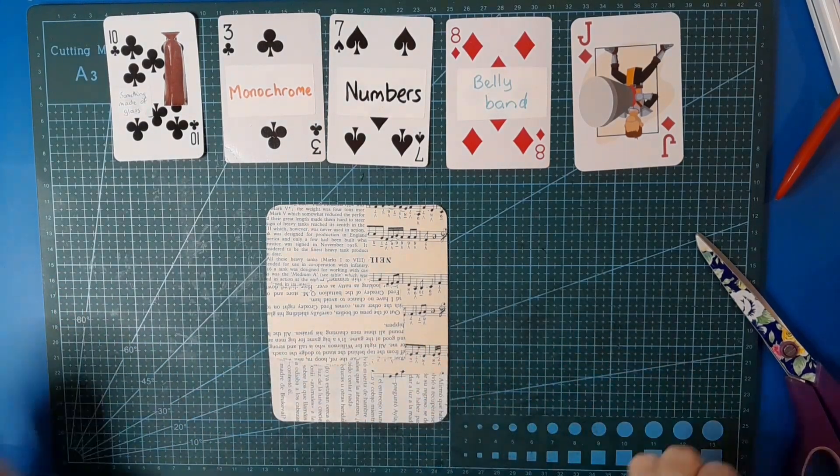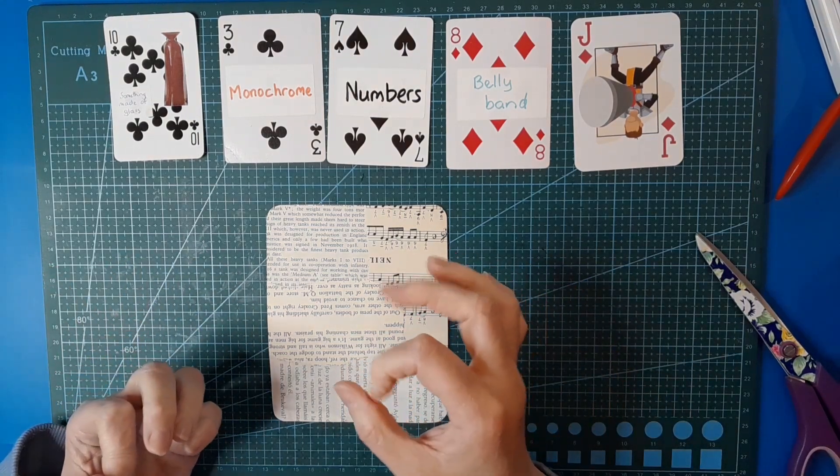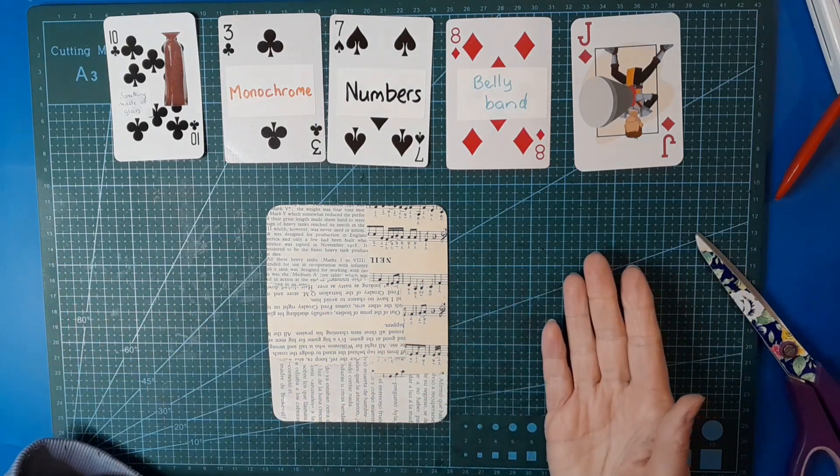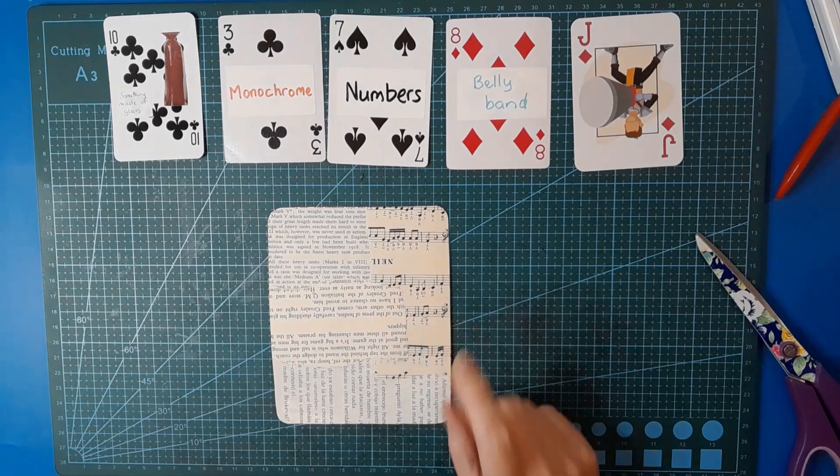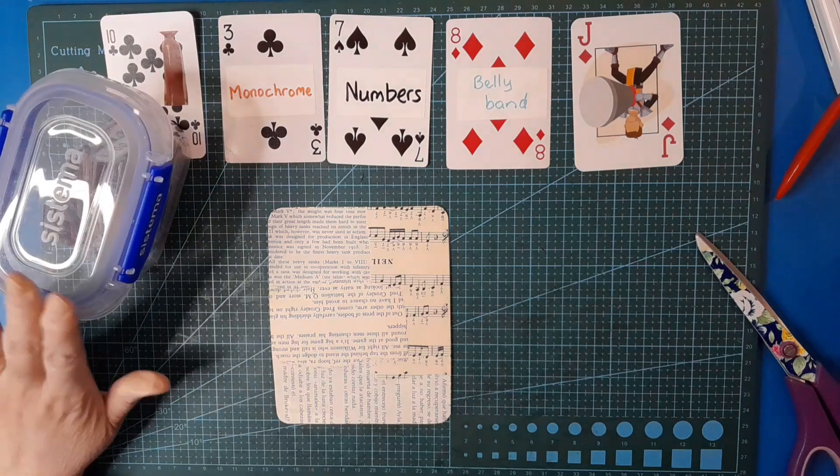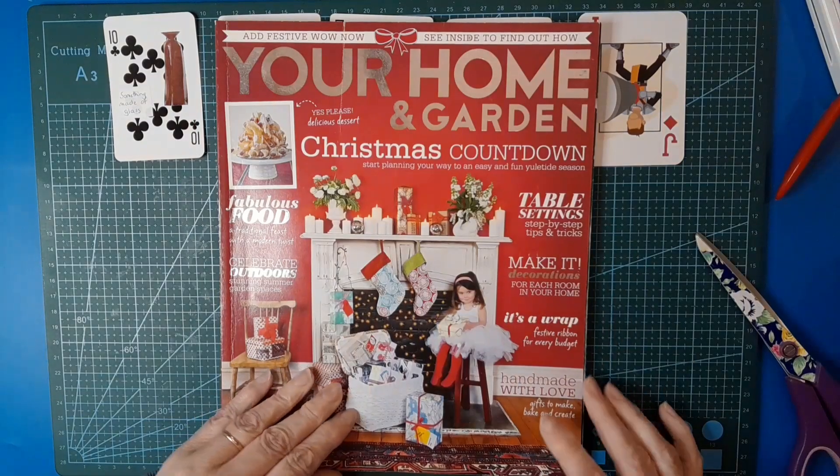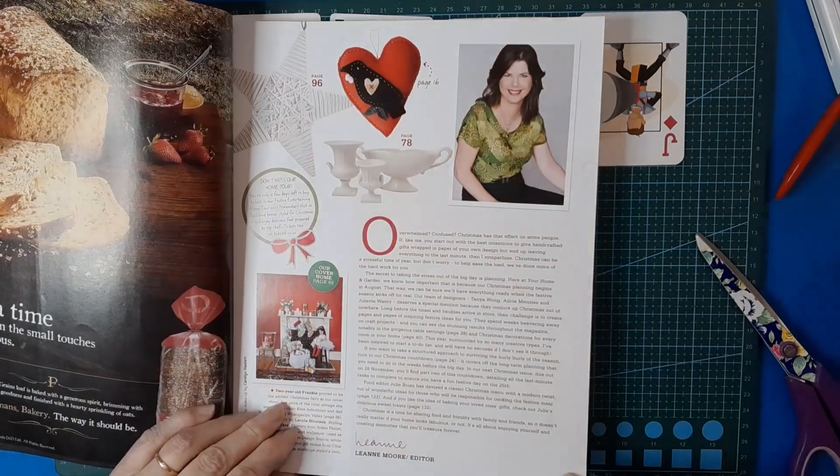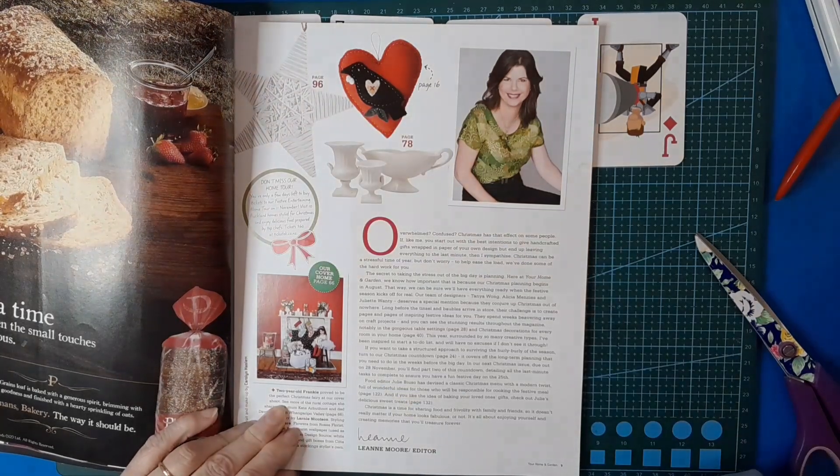We've got monochrome, something made of glass. You could stick on something that's actually made of glass like glass pebbles, but more than likely you're going to want to put a picture on. I need to find a picture of something glass. I also need numbers - there are numbers on the music paper but I want some more. I'll grab out my stamp numbers and I'm thinking this Christmas magazine might be a good place to look.